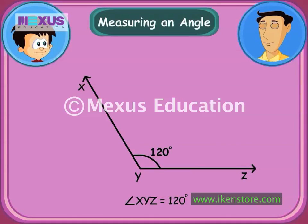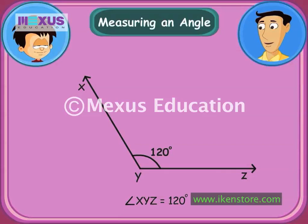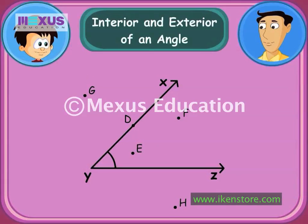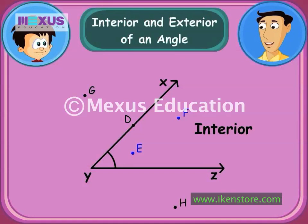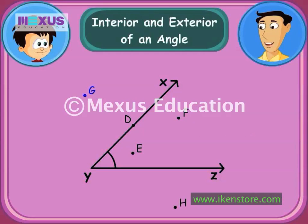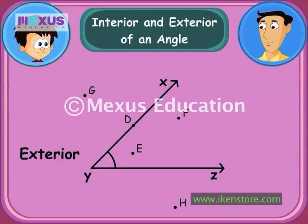That was easy — 120 degrees. So this is an obtuse angle, isn't it, Dad? Yes, it is, because it measures more than 90 degrees. Now, look here — I've drawn some points on this angle. Can you name points which lie on angle XYZ? D. Which are the points you can see here, JC? E, F, G, and H. If you look carefully, points E and F lie inside the angle — that is, in the interior of angle XYZ. Points G and H lie outside angle XYZ — that is, in the exterior of angle XYZ.